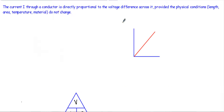The current I through a conductor is directly proportional to the voltage difference across it, provided the physical conditions do not change. Physical conditions are the parameters that influence the resistivity of a circuit, such as length, area, temperature, and material type. Now let me concentrate on the first portion: the current I through a conductor is directly proportional to the voltage difference across it.